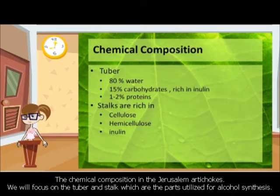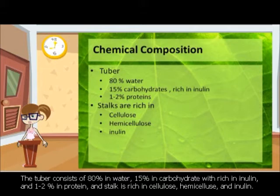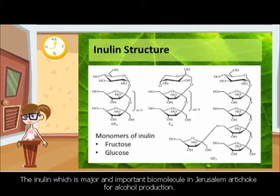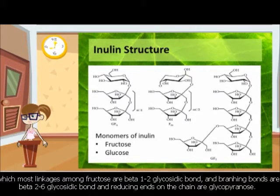The chemical composition in Jerusalem Artichoke — we will focus on the tuber and stalk, which are the parts utilized for alcohol synthesis. The tuber consists of 80% water, 15% carbohydrate rich in inulin, and 1 to 2% protein. The stalk is rich in cellulose, hemicellulose, and inulin. Inulin is the major and important biomolecule for alcohol production. Its structure is a heteropolysaccharide consisting of monosaccharide monomers such as alpha-D-glucose and fructose, where most linkages among fructose are beta-1,2 glycosidic bonds, and branching bonds are beta-2,6 glycosidic bonds, with the reducing end of the chain being glucofuranose.